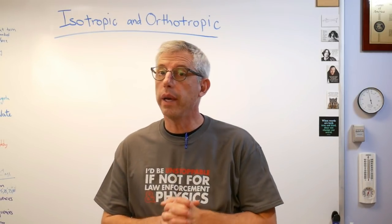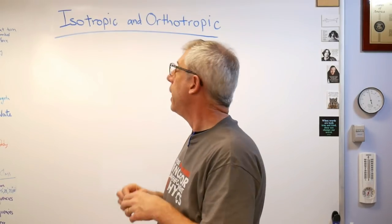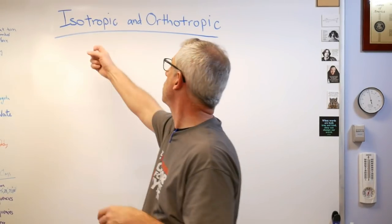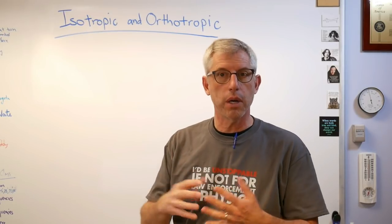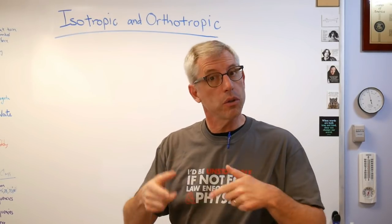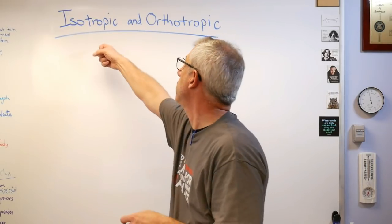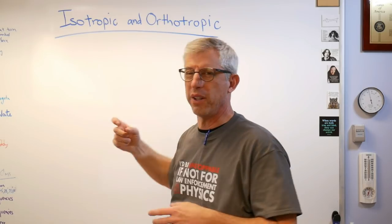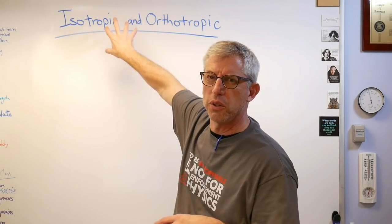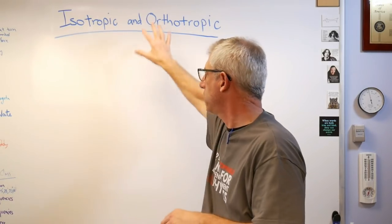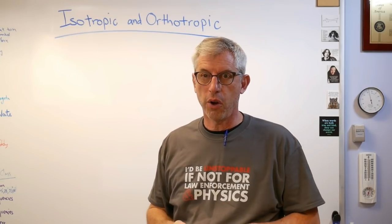Hey scholars, good to be back. Today I'd like to talk about some material properties and the words you'll see a lot when you're in Strength of Materials, or more advanced courses like composite materials or structural mechanics. You'll see words like isotropic and orthotropic — there's also anisotropic, but let's stick with these, as they cover most materials you'll encounter. You'll also see the term homogeneous.